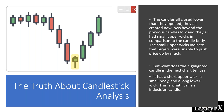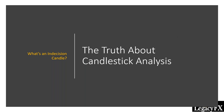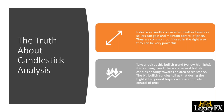Now, what does the highlighted candle tell us? It has a short upper wick, a small body, and a long lower wick — this is an indecision candle. Don't get too excited though; we get indecision candles all the time. It could mean buyers or sellers are just tired for a moment, or they're watching the news. Indecision candles appear quite often, and you have to be able to see them, but you don't want to act on them alone. Indecision candles occur when neither buyers nor sellers can gain and maintain control of price — but if used in the right way, they can be very powerful.